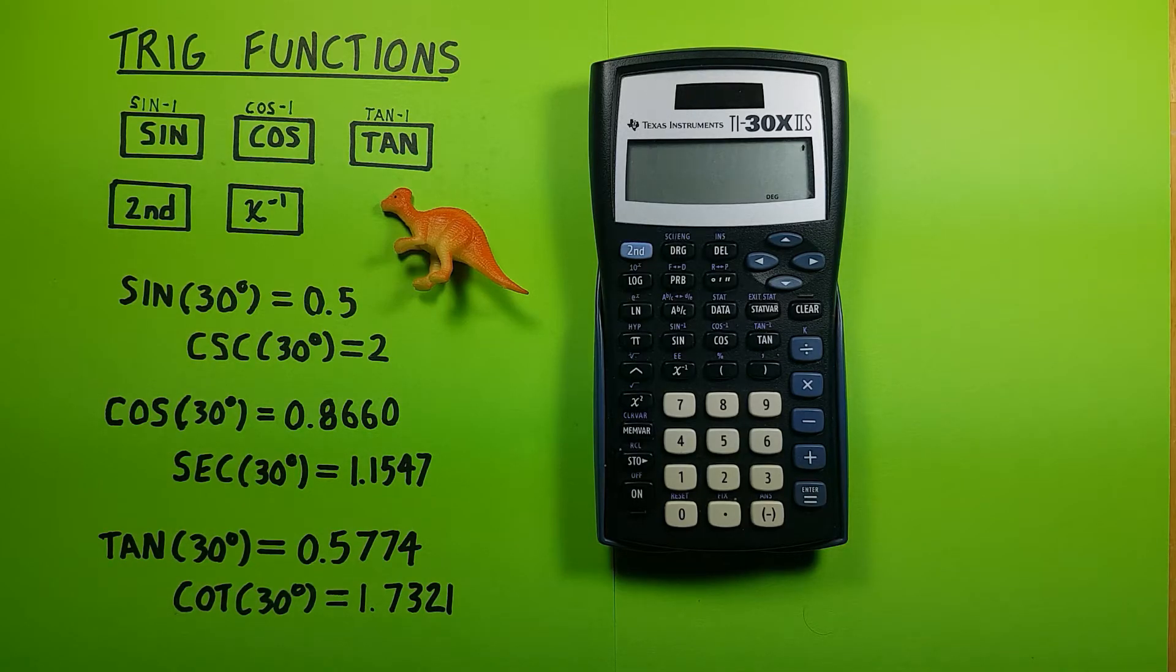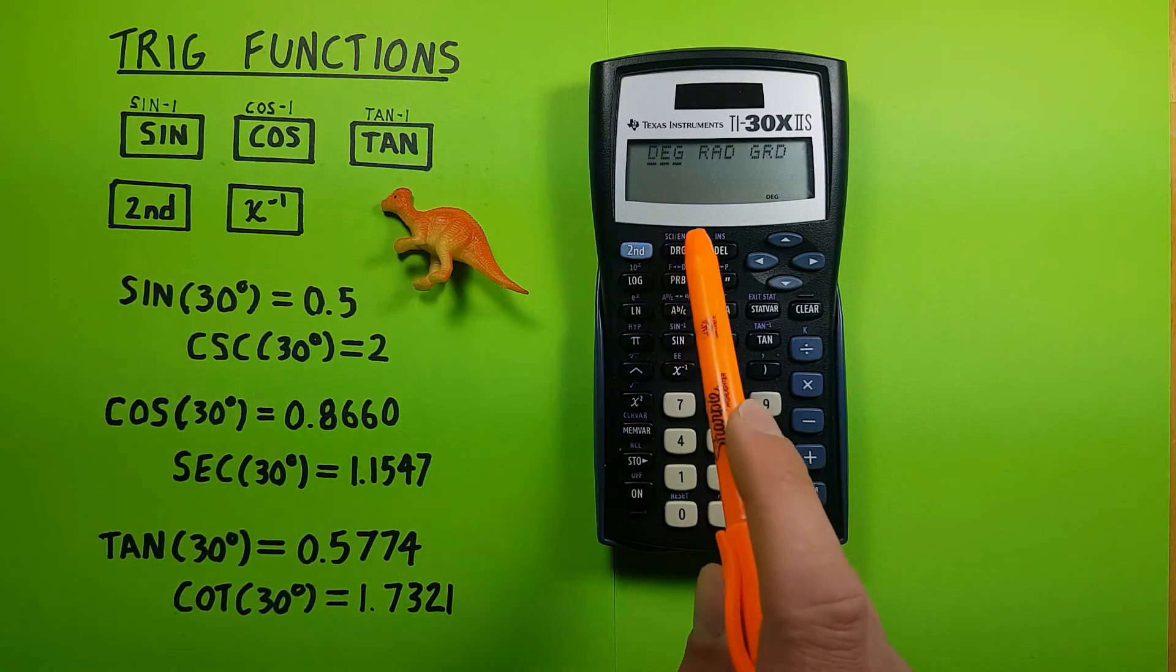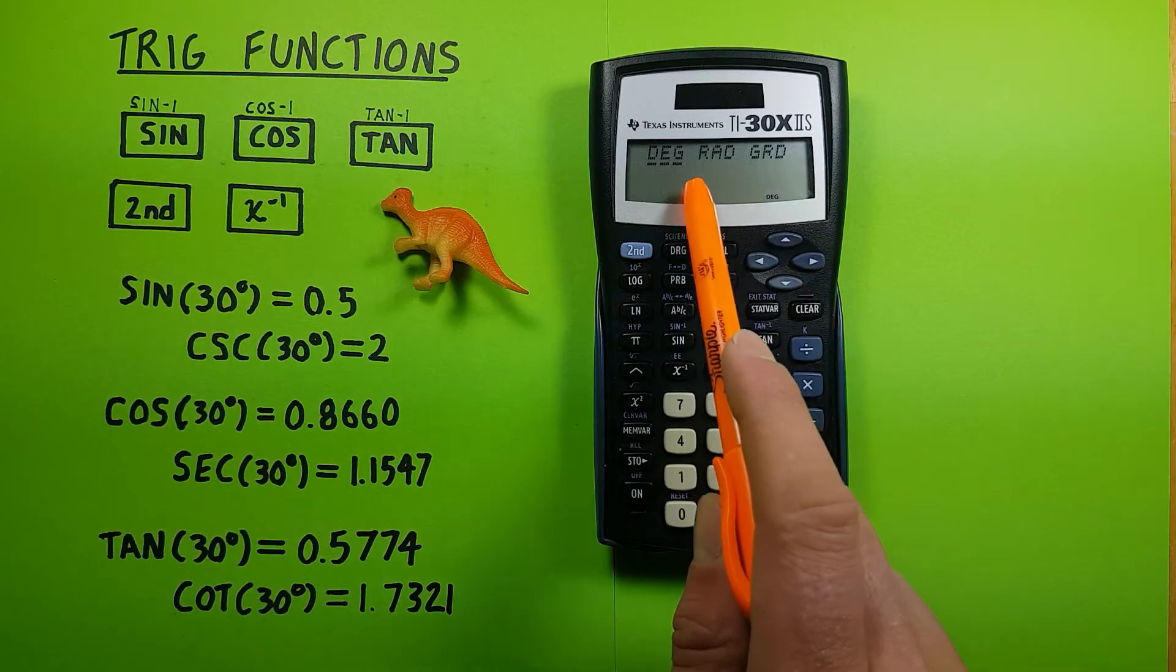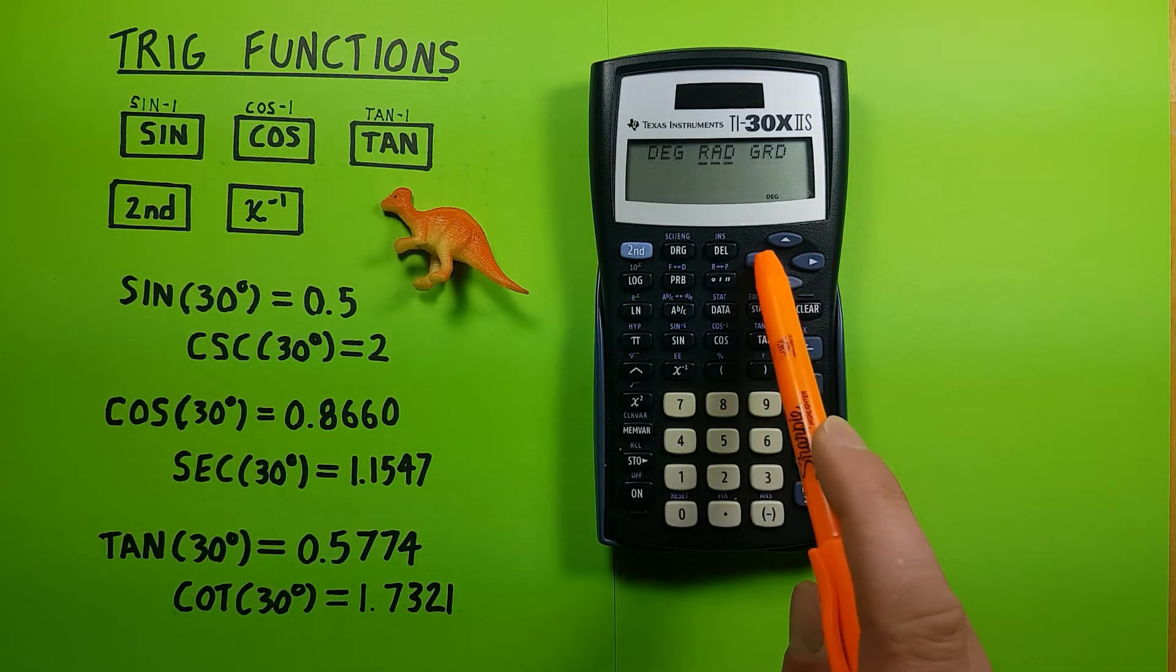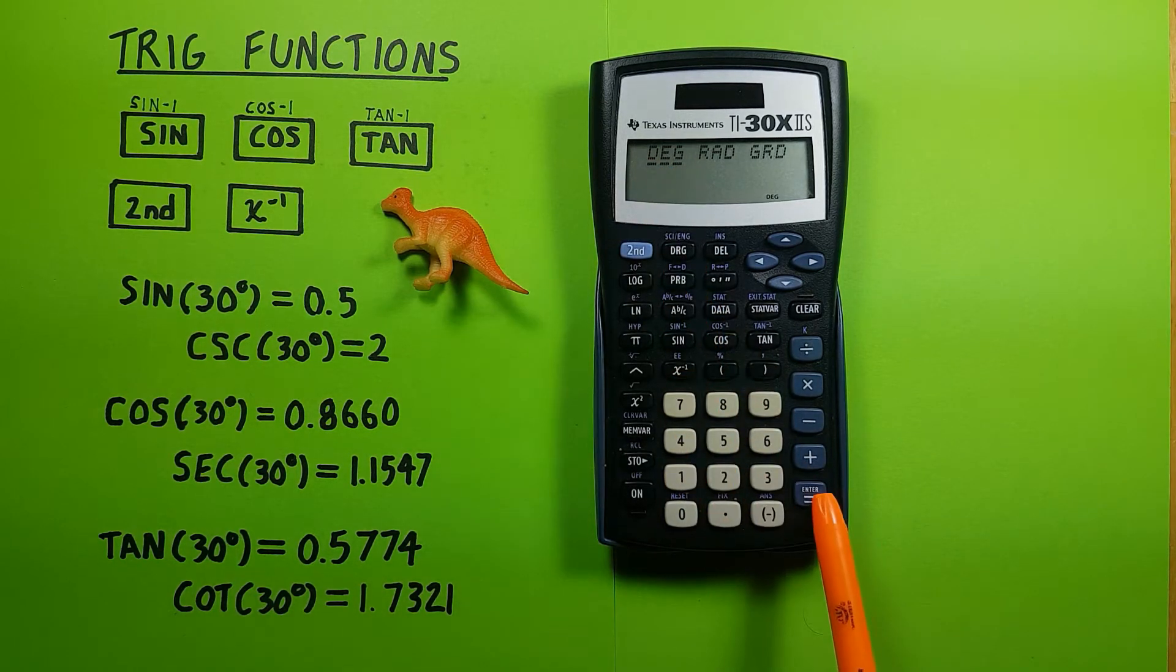If it's not, you can press the DRG key here to bring up this menu. We want to move our cursor over until we get to DEG and press equals, and that will convert our calculator into degrees mode.